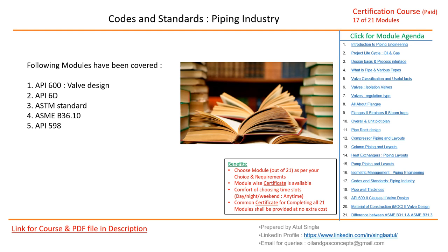ASME B36.10, the dimensional standard, is commonly used in the piping industry and will be explained. API 598, the commonly used standard for valve inspection, will also be covered — its key clauses needed for valve inspection. So five modules covering all these standards will be discussed in this very interesting section.